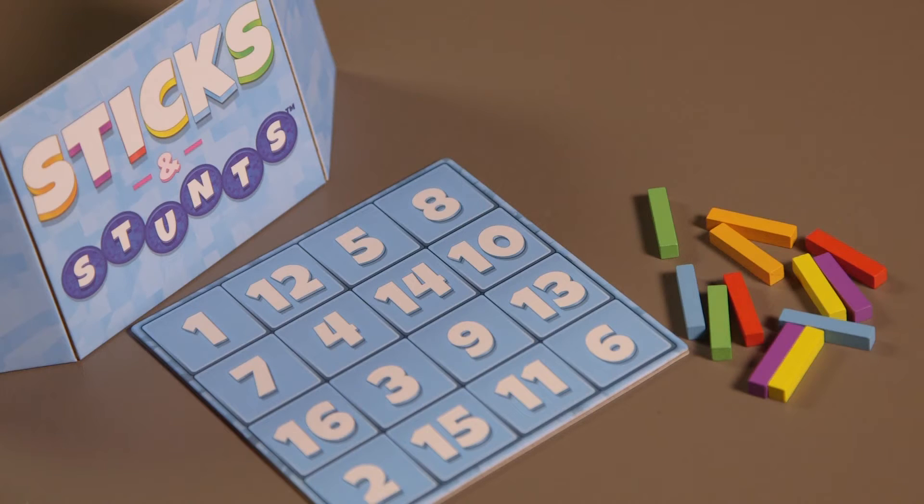To set up the game, first decide if you will play as individuals or on teams. Distribute the Stunt Sticks to all players or teams, giving everyone at least two sticks of each color. All players or teams select one bingo board and one screen in the same color.